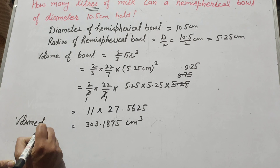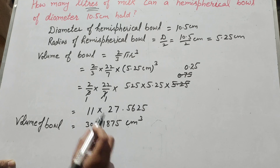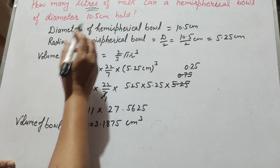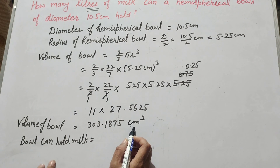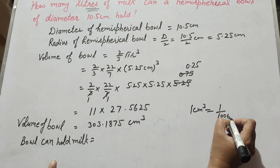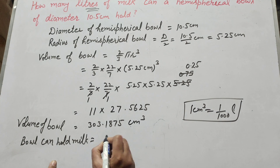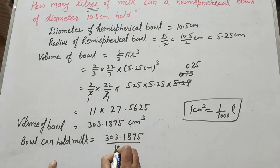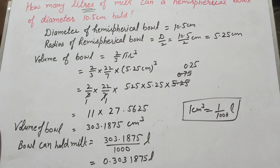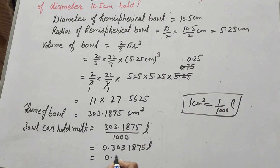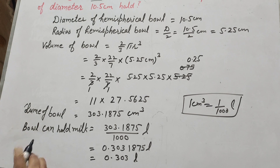Now we find the amount of milk the bowl can hold in liters. We convert centimeter cube to liters using: 1 cm³ = 1/1000 liters. So 303.1875 divided by 1000 equals 0.3031875 liters, which is approximately equal to 0.303 liters. Therefore, the bowl can hold 0.303 liters of milk.